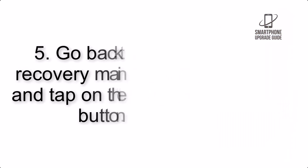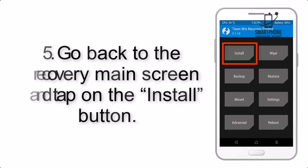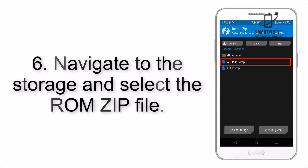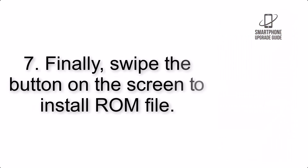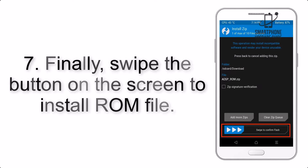Step 5: Go back to the recovery main screen and tap on the Install button. Step 6: Navigate to the storage and select the ROM zip file. Step 7: Finally, swipe the button on the screen to install the ROM file.